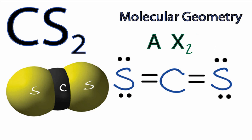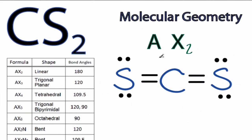You could have memorized that AX2 is a linear molecular geometry, or if you have a table available, you could look it up. When we look at our table, we see that AX2, that's the first entry. It is linear, and the bond angle is 180 degrees.